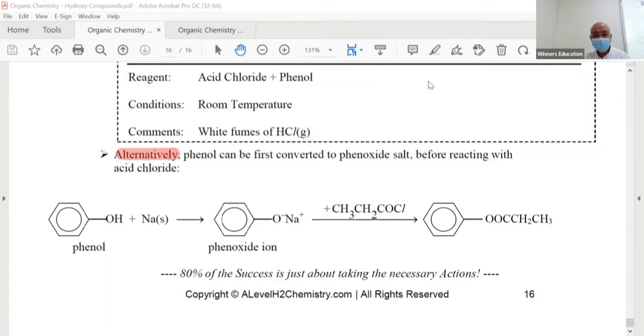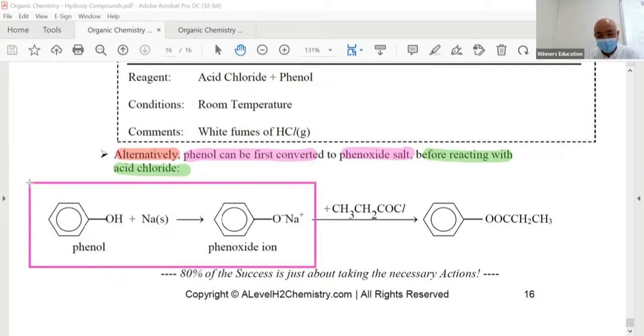Phenol can be first converted to phenoxide salt before reacting with acid chloride. So what happened is here, take a look: the phenol, they didn't react with the acid chloride directly. They convert to here first. What reaction is this? Acid-metal reaction, i.e., redox reaction.